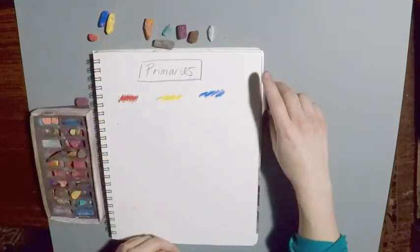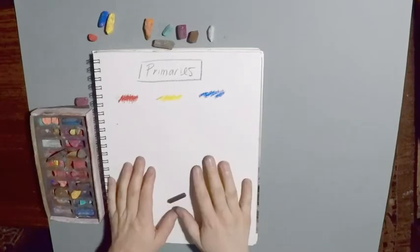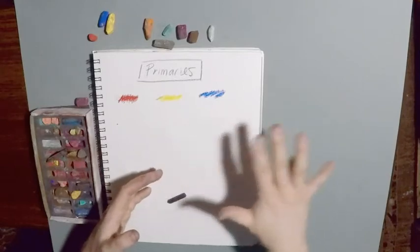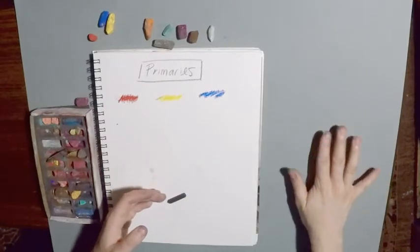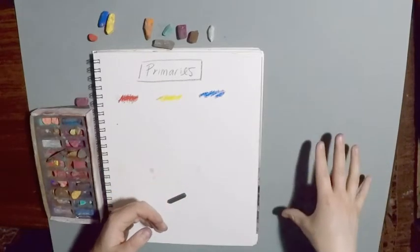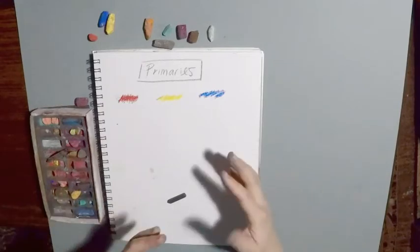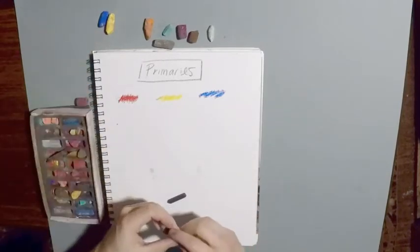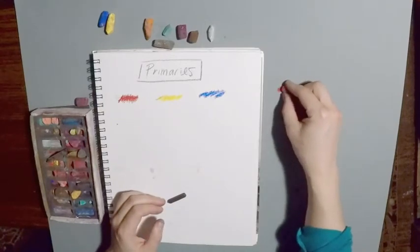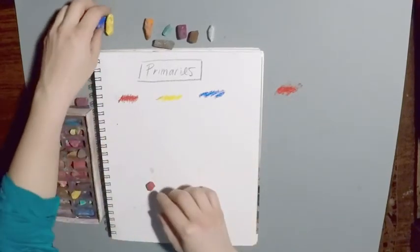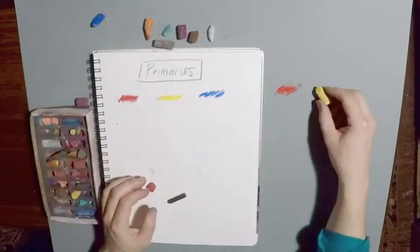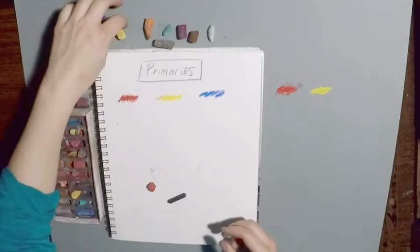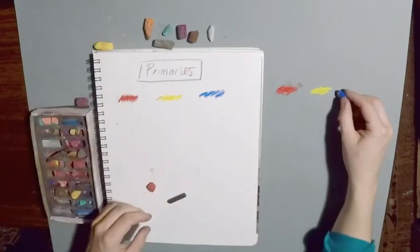We're also going to be comparing and contrasting white paper — a white surface — with a mid-tone surface. So this is our gray paper. One isn't necessarily better than the other; they just have different effects. We're going to put both of these things on each piece of paper and you will see that they register to the eye in different ways.